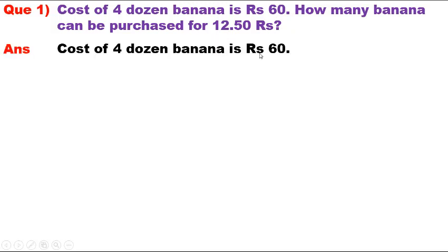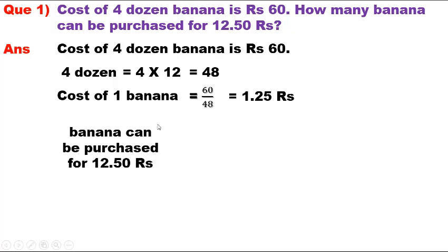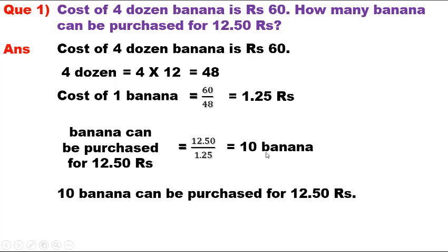Cost of 4 dozen bananas is Rs. 60. 4 dozen bananas = 4 x 12 = 48 bananas. Cost of 1 banana = Rs. 60 / 48 = Rs. 1.25. Bananas that can be purchased for Rs. 12.50 = Rs. 12.50 / Rs. 1.25 = 10 bananas. Therefore, 10 bananas can be purchased for Rs. 12.50.